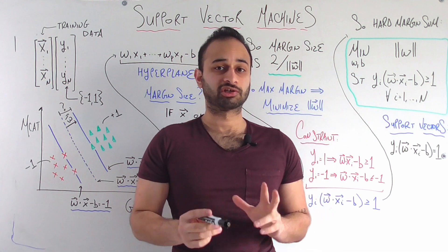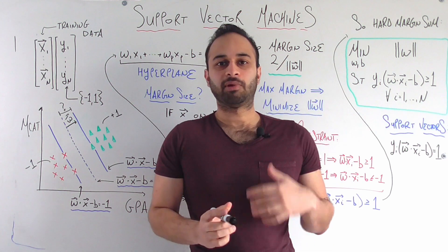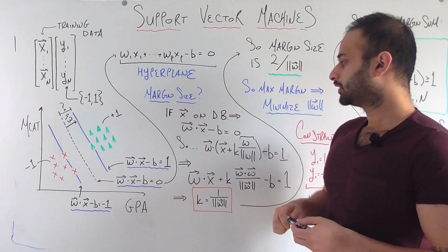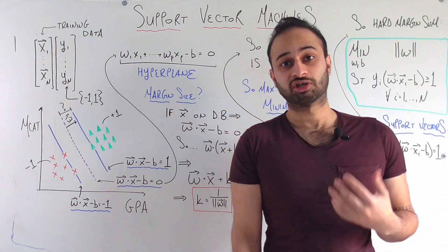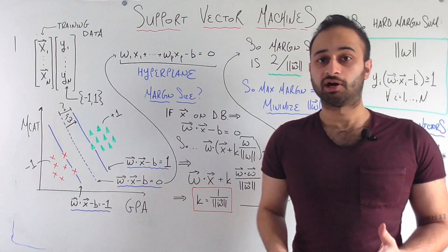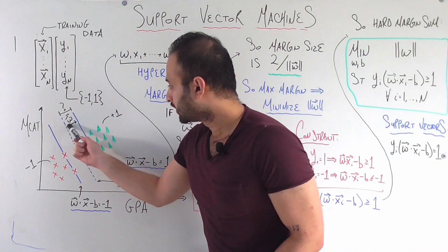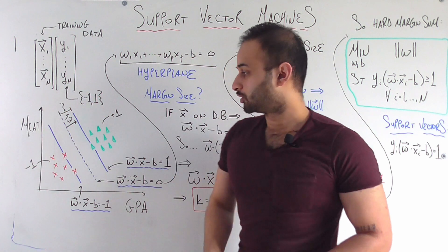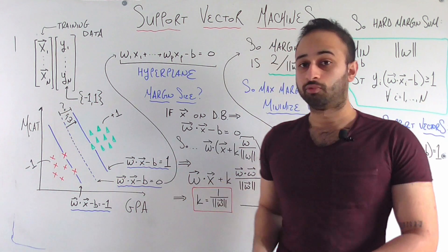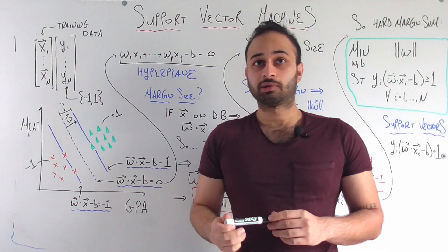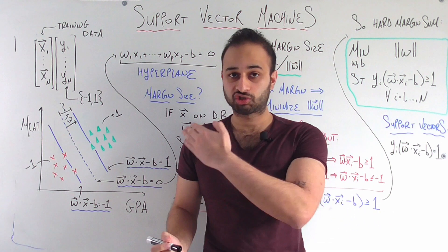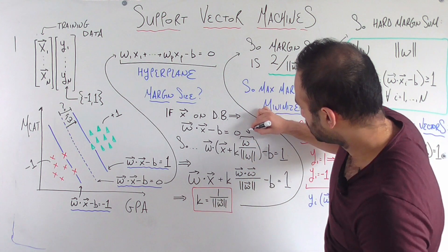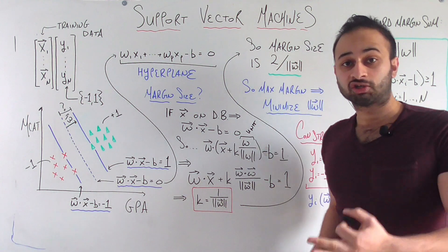Knowing that we can start forming a story. We can say that, let's say that I am a vector x who is on the decision boundary. If x is on the decision boundary, then it must follow the equation of the decision boundary, which again is w dot x minus b equals 0. So I'm here, and I want to know how many units do I need to walk in the w direction in order to get to this other blue line whose equation is written here. The first thing I'm going to do is make a unit vector who goes in the direction of w, which is simply w divided by the magnitude of w.